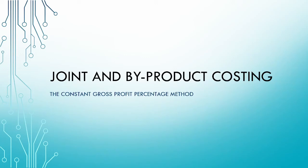Welcome to the fifth video in our series on joint and by-product costing. In this video, we are going to look at our final method of allocating the joint costs, namely the constant gross profit percentage method.